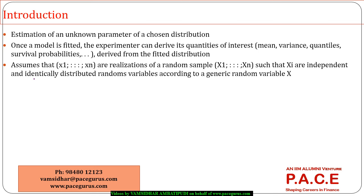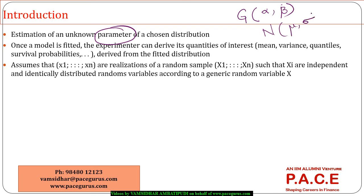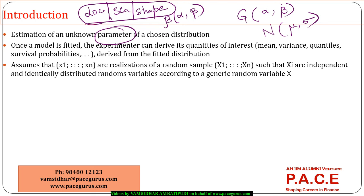So primarily the main point we are covering in this session is looking at unknown parameters for a particular distribution. When we are talking about a gamma distribution we talk about two unknown parameters alpha and beta. Similarly for a normal distribution we talk about mu and sigma. For a beta distribution we again talk about alpha and beta. So different kinds of distributions have different parameters — there could be location parameters, scale parameters, and shape parameters. Some combinations of these parameters define different kinds of distributions.